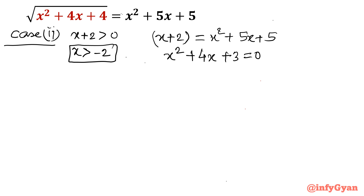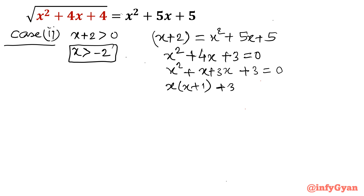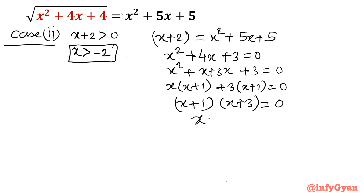Factorization can also be applied here. The factors of 3 are 3 and 1. Splitting the middle term: 4x = x + 3x. So x² + x + 3x + 3 = 0. Taking x common from the first two terms and 3 common from the last two terms gives (x + 1)(x + 3) = 0. So x = -1 and x = -3.